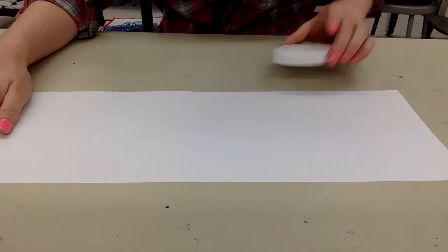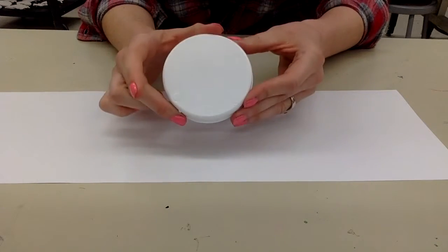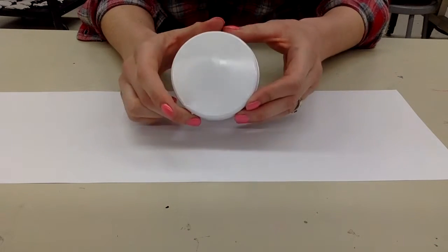We're going to start out with a long piece of paper, and we're going to start out with a circle. Now, we're going to first make six circles for the body of our caterpillar.